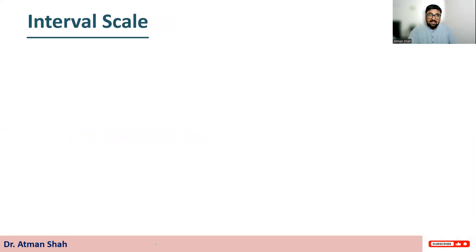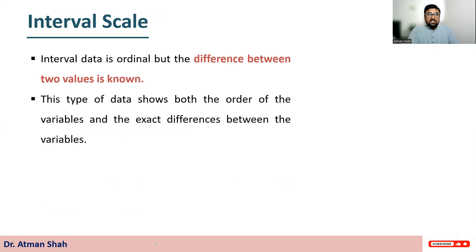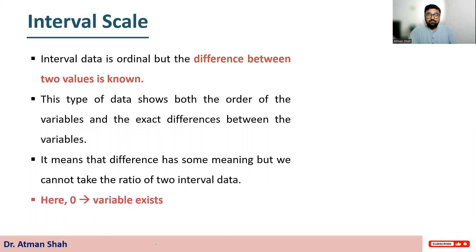Third is interval scale data. So interval data is ordinal but the difference between two values is known. So this type of data shows both the order of the variables and the exact difference between the variables. And it means that difference has some meaning, but we cannot take the ratio of two interval data.